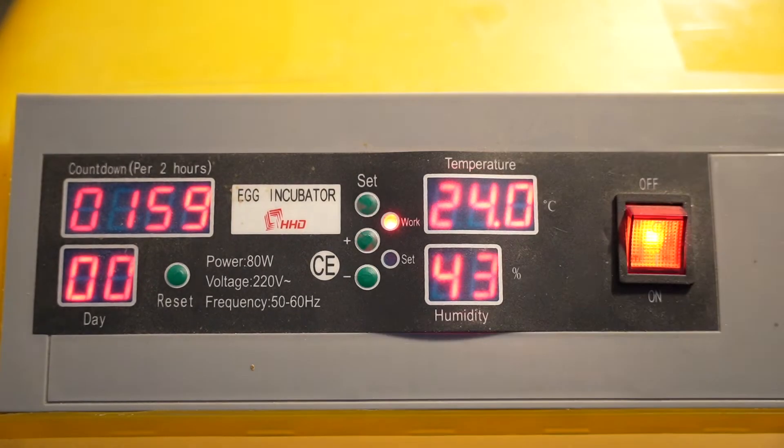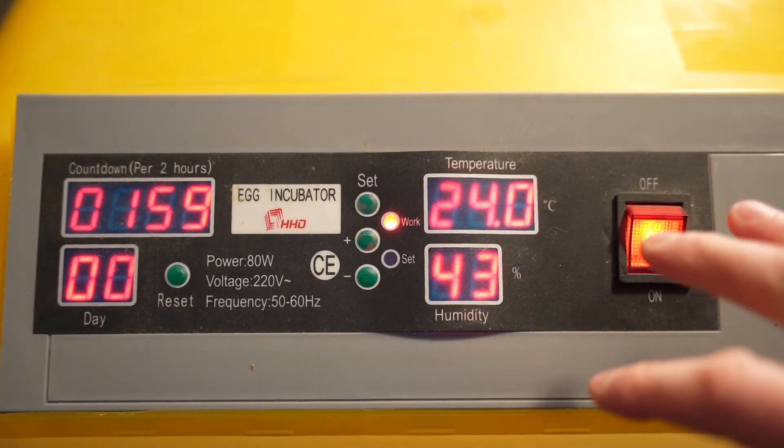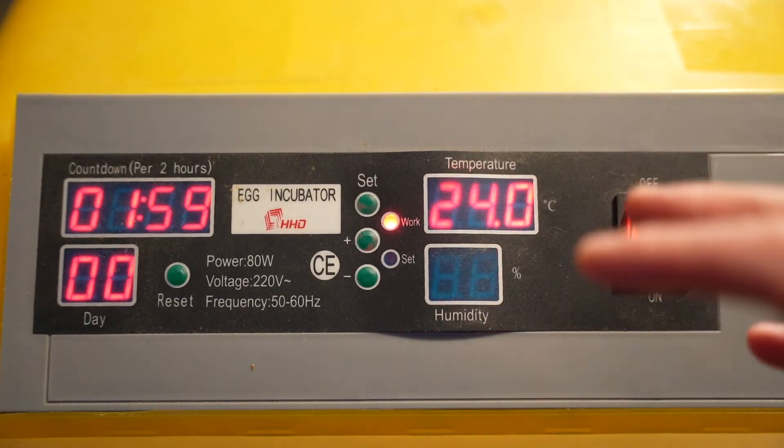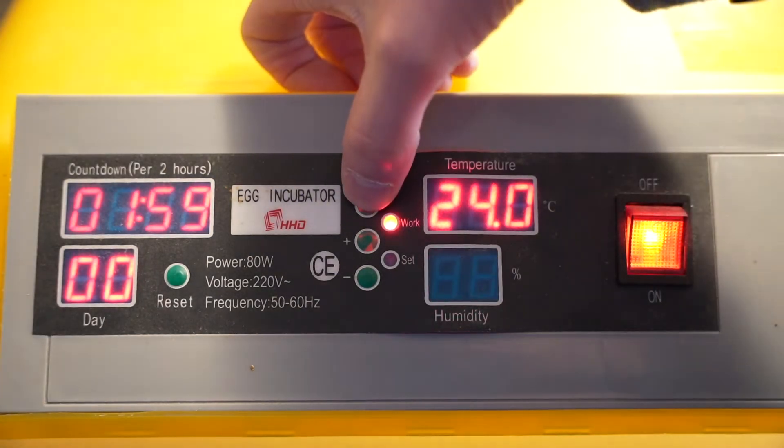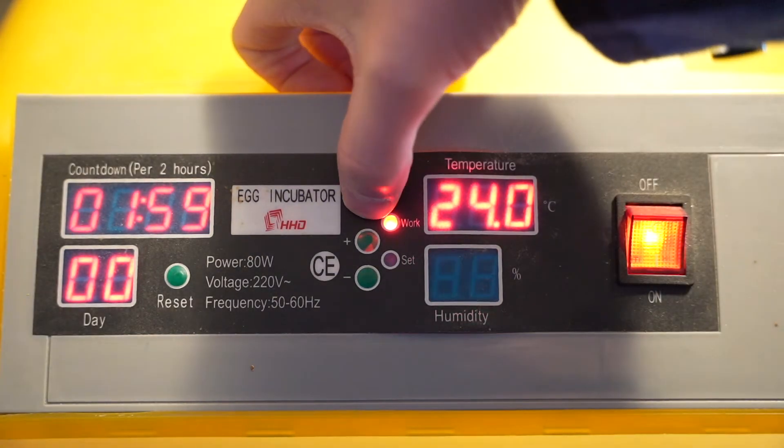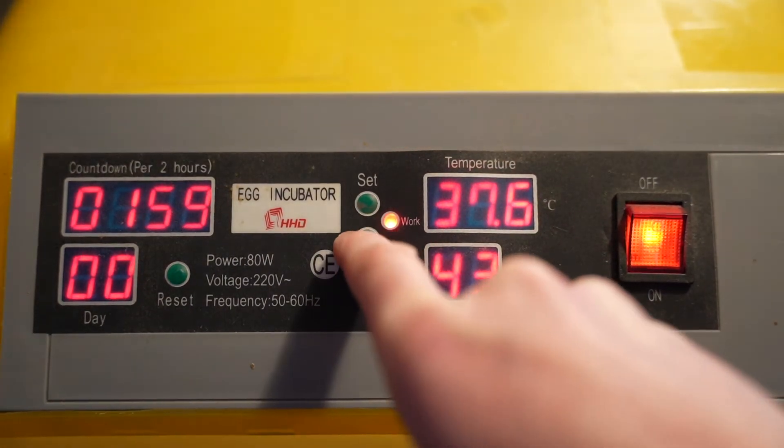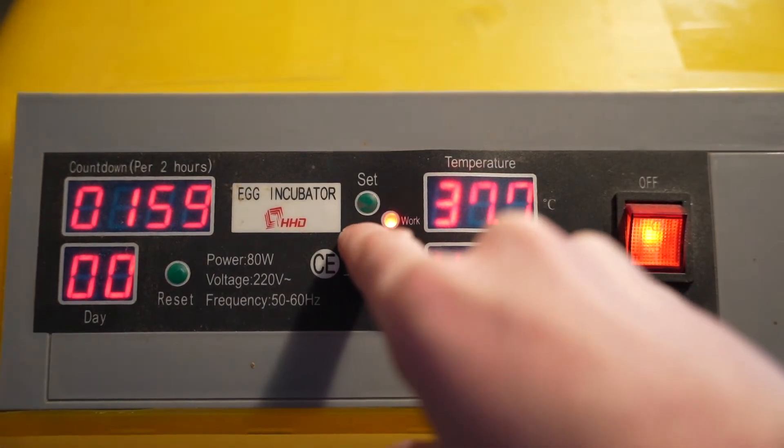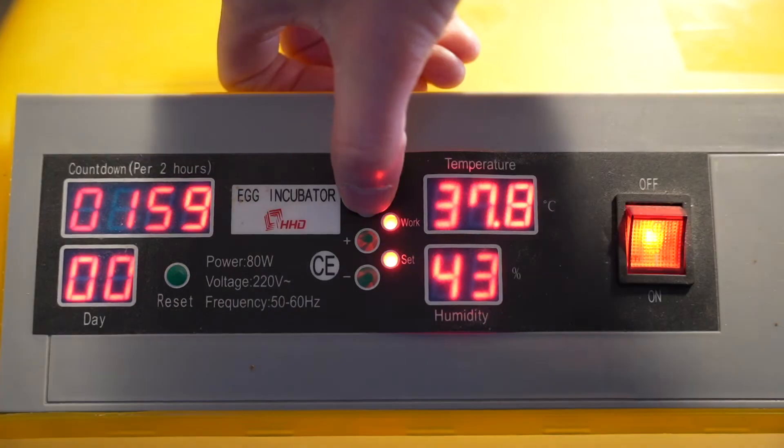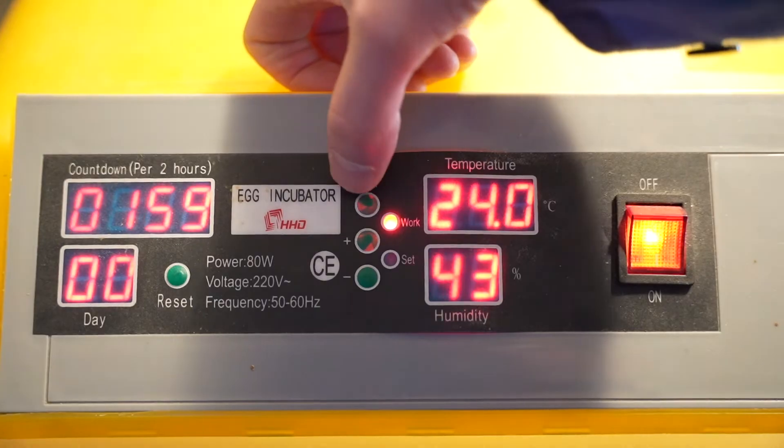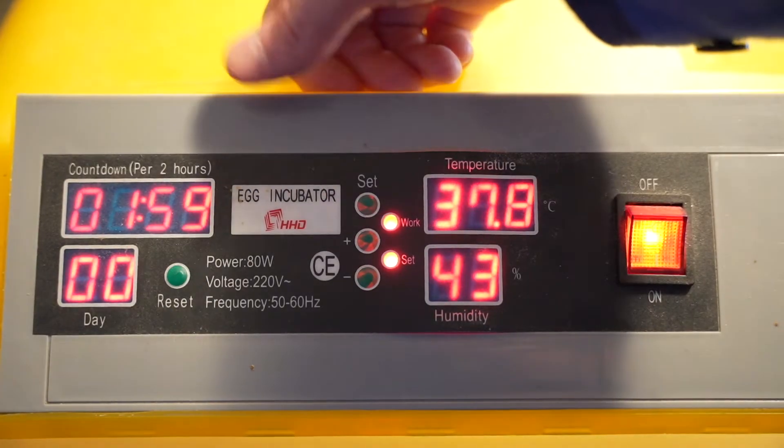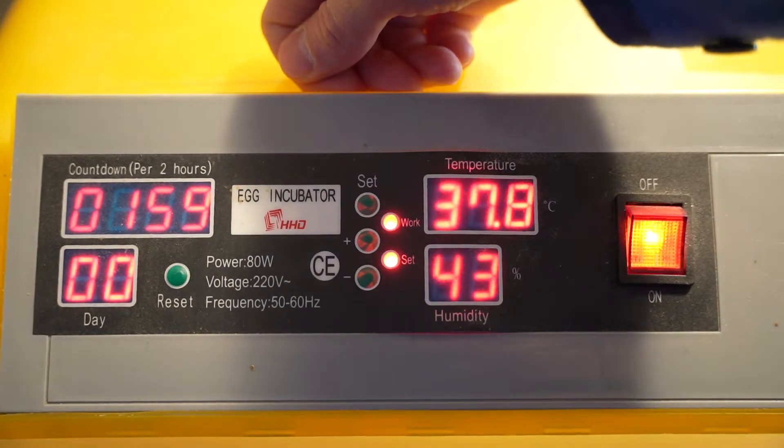To set up the temperature to the value that you want, for example 37.8 degrees, you need to press the set button just once. And now you can adjust the temperature by pressing the plus and minus button and then press set again. To check the temperature again you have to press the set button. So you see the temperature is set correctly.